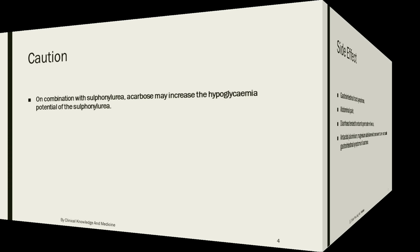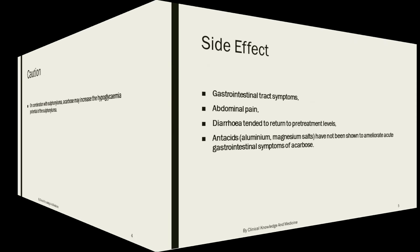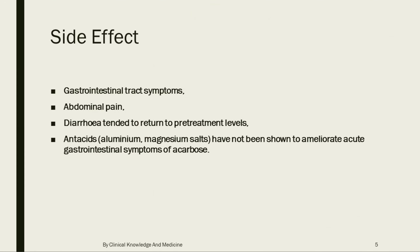Side effects include GI tract symptoms: abdominal pain and diarrhea, which return to pre-treatment levels over time. Antacids containing aluminium and magnesium salts have not been shown to ameliorate the acute gastrointestinal symptoms of Acarbose. Thank you, keep watching Clinical Knowledge in Medicine.